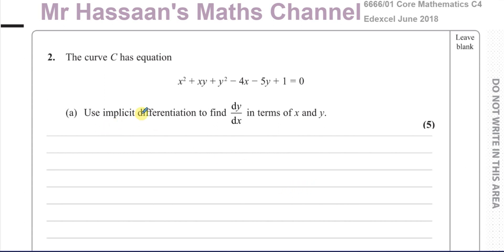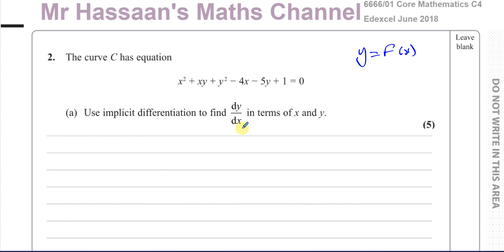The question tells us to use implicit differentiation to find dy/dx in terms of x and y for the equation of this curve. Implicit differentiation is used when we don't have something explicitly written as y equals some function of x. Making y the subject of this equation would be quite laborious, so we find dy/dx implicitly, and our answer will be in terms of x and y.